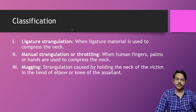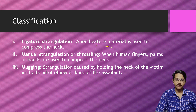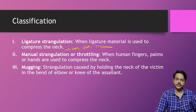Based on the material or means by which strangulation is done, it can be divided into different types. First is ligature strangulation, where ligature material is used to compress the neck. The ligature material may be anything like wire, cloth, thread, or a rope.